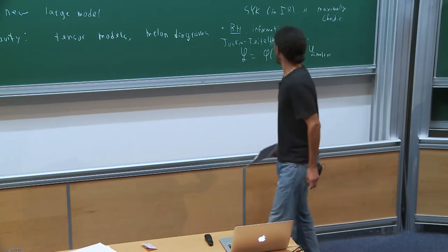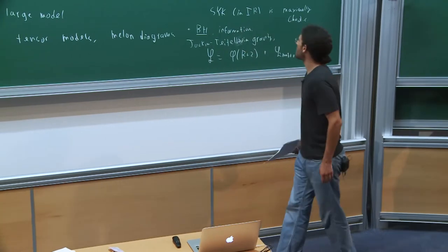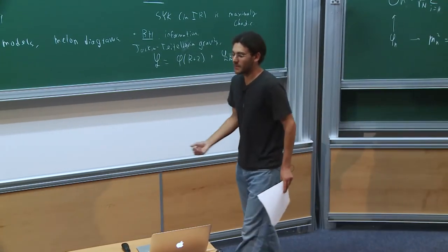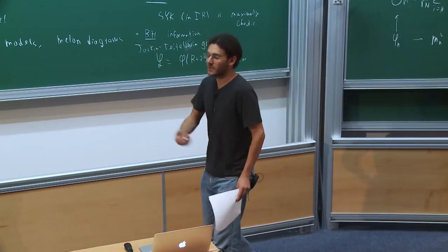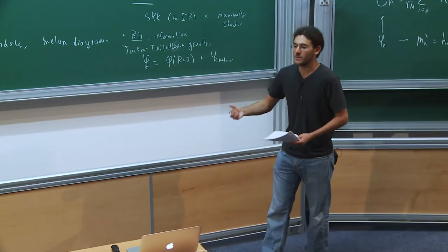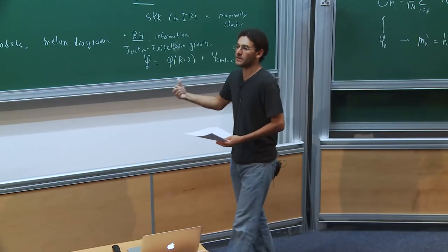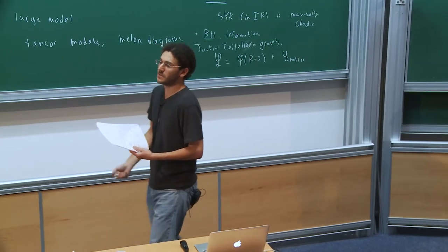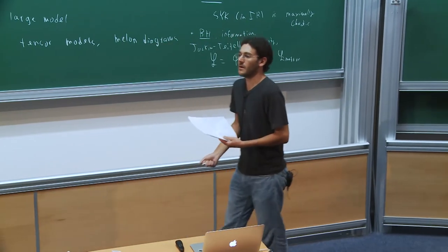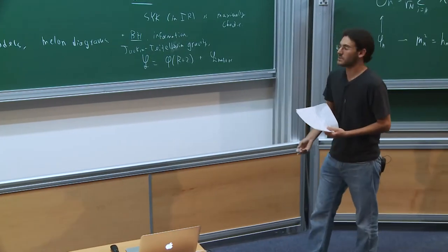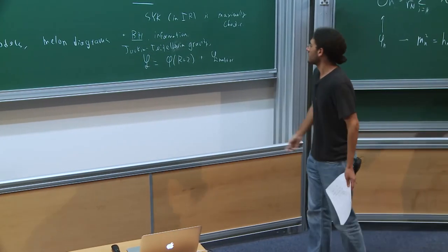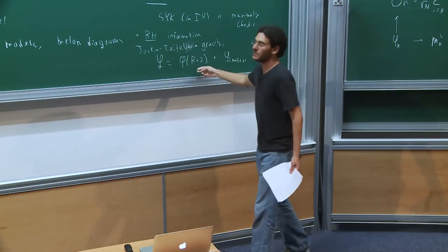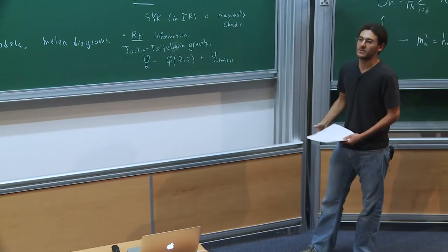In retrospect this is not so surprising, because black holes in Einstein gravity all saturate the chaos bound, and we know there are many different theories that give Einstein gravity in the low-energy limit. So Einstein gravity is universal in that sense, and this analog in two dimensions is also somewhat universal.